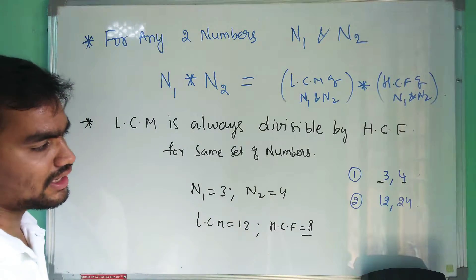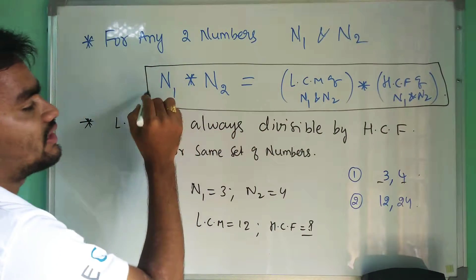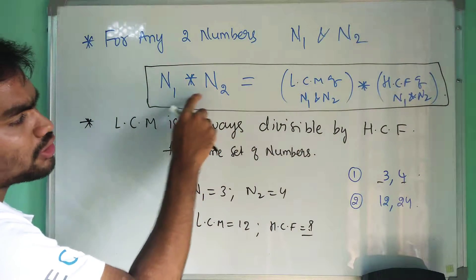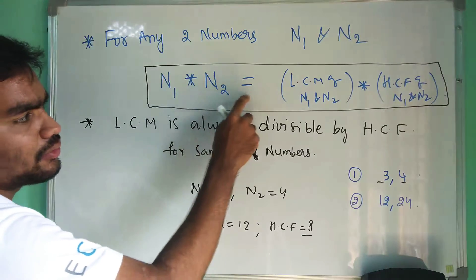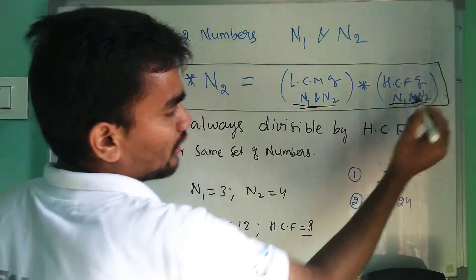So to find that you can use this formula: for a given set of numbers n1 and n2, the product of them, n1 times n2, is equal to the product of the LCM of the two numbers and the HCF of the two numbers.